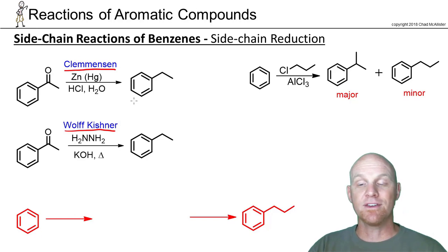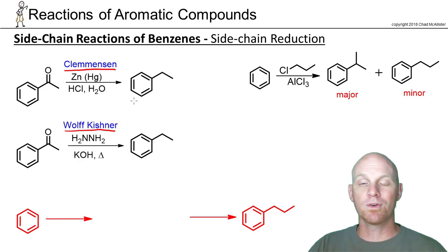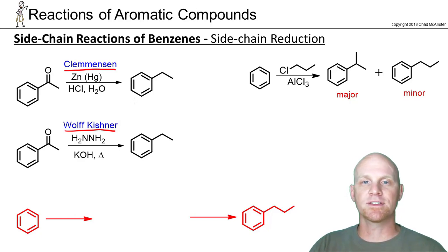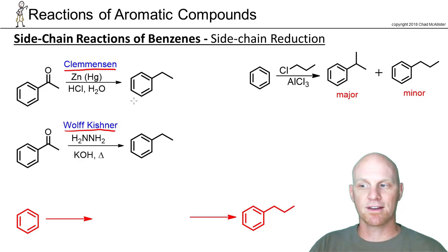We're not going to go through either mechanism here. The Clemmensen reduction mechanism is something you may have a small chance of needing to know, but for most students, probably not. The Wolff-Kishner mechanism, if it's taught, is usually covered later in the semester in either the aldehyde/ketone chapter or possibly the amine chapter — but usually not here.